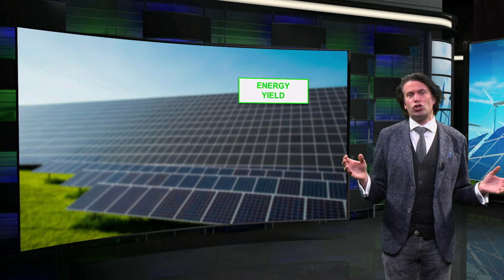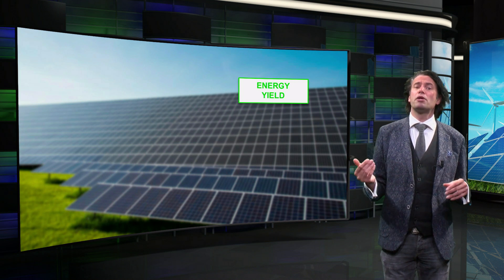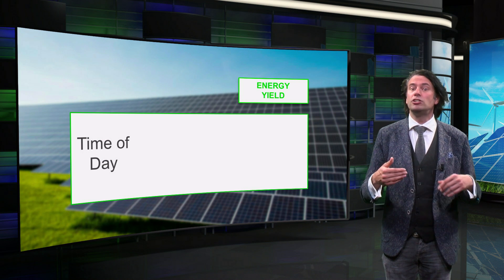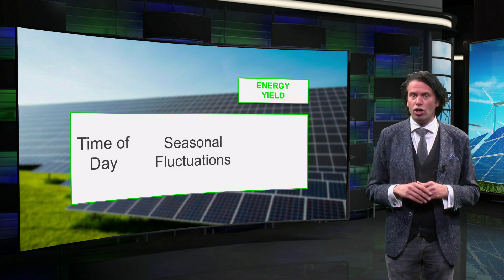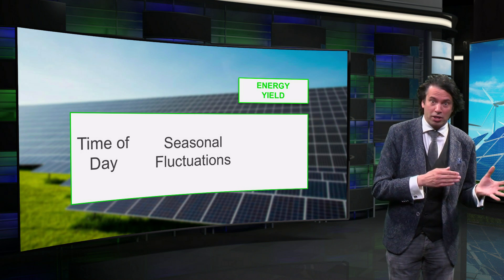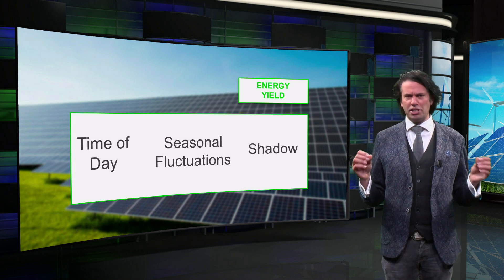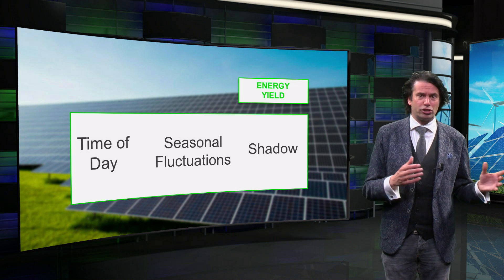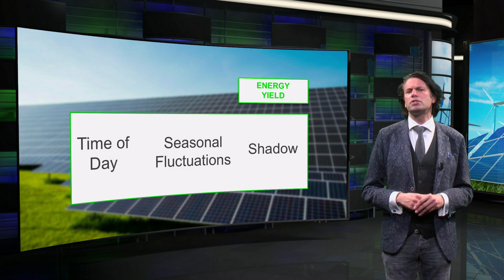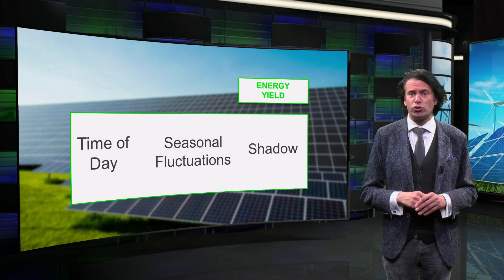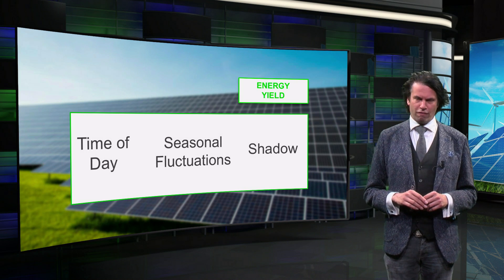Solar energy is notorious for its low capacity factor. This is because solar radiation strongly depends on the time of day and seasonal fluctuations. Especially in countries far from the equator, there is a lot more sunlight available in the summer than in the winter. Shadows should also be considered, since trees and buildings can cast shadows that strongly influence the performance of a solar cell. In solar farms, panels can even cast shadows onto each other, which is important when designing a solar farm.